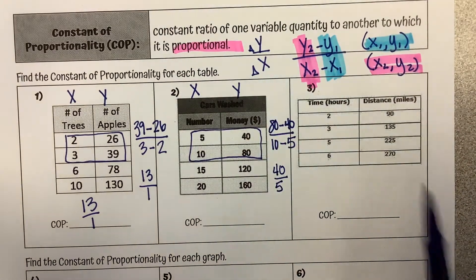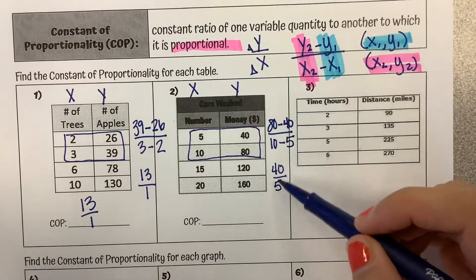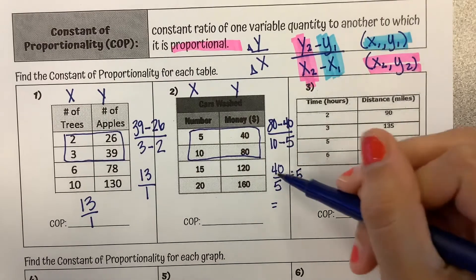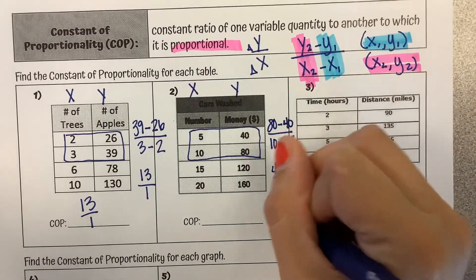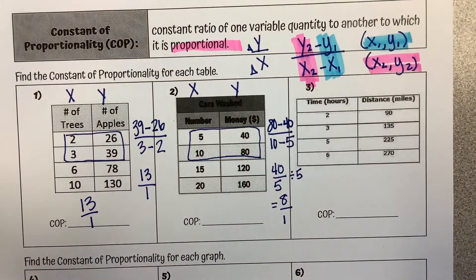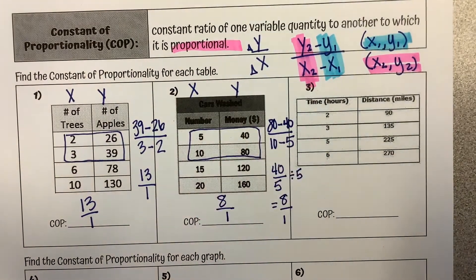So I could say that I stopped here, but we're not going to, because we want to simplify that. 40 and 5 divide by 5 to become, 40 divided by 5 is 8. 5 divided by 5 is 1. So our constant of proportionality is 8 over 1.